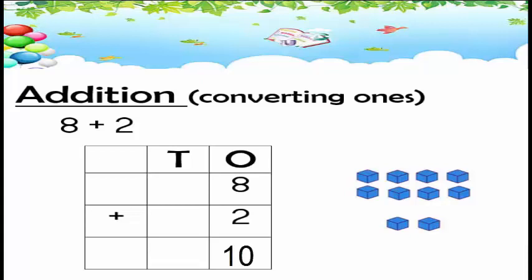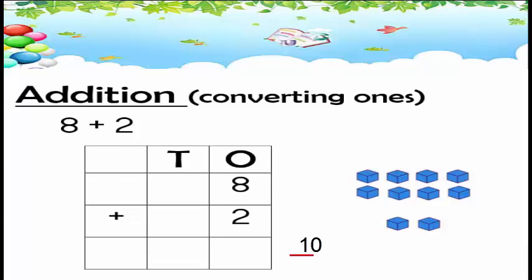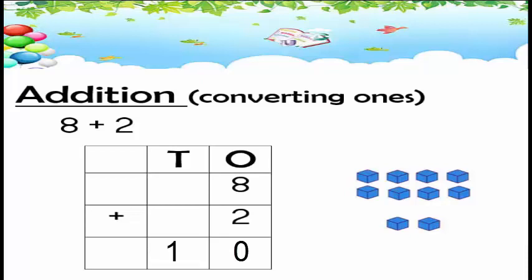Can we write 10 in the ones column? No, we can't write 10 in the ones column. So what do we do? We convert 10 ones into one ten, and we shift that one ten into the tens column — it is carried forward. So we write 0 in the ones column and 1 in the tens column. Our answer is 10.